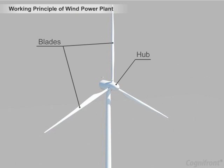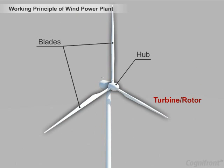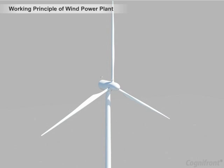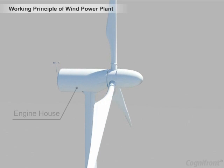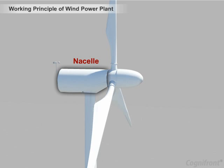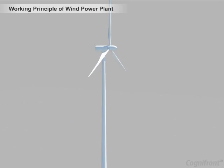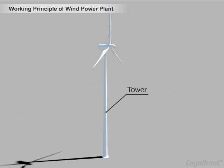The hub and blades are called the turbine or rotor. Behind the turbine there is an engine house called the nacelle. The nacelle is mounted on a tower in order to get more wind energy.